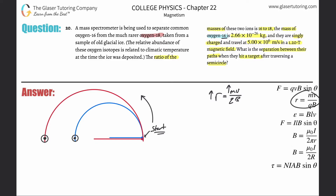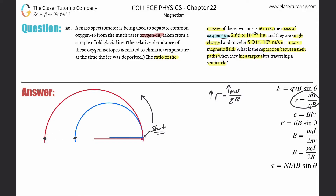Those are the ending positions for the two particles. The question asks for the separation between their paths when they hit a target — somewhere over here — and we want the separation distance between them. I'll call that x for now. How do we find it if we know the radii?